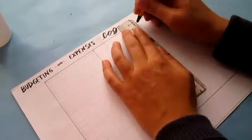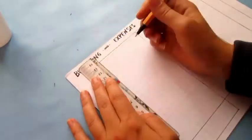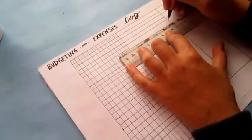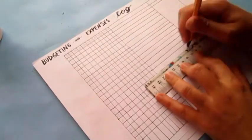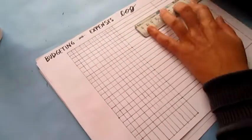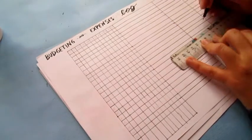So I divided the first page in twelve columns that of course represent each month of the year and in the next page I put three columns about the item, about the category and the price.